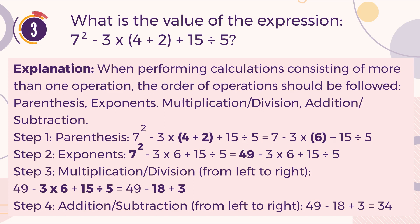Step 3. Multiplication and division, from left to right: 3 multiplied by 6 equals 18, and 15 divided by 5 equals 3. The expression now can be written as 49 minus 18, then plus 3. Finally, addition and subtraction, also from left to right: 49 minus 18 equals 31, then 31 plus 3 resulting in 34.